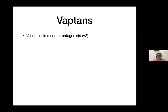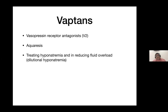Vaptans are V2 receptor antagonists that cause aquaresis — loss of just water without sodium loss — making them tempting for use in patients with dilutional hyponatremia where diuretics cannot be used. The only option otherwise is to restrict fluid intake and wait for sodium to correct.